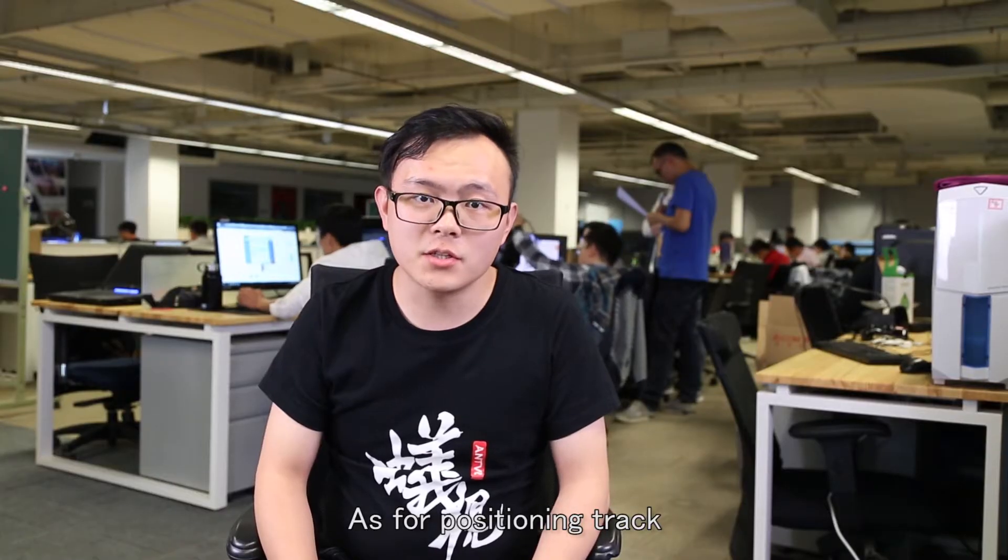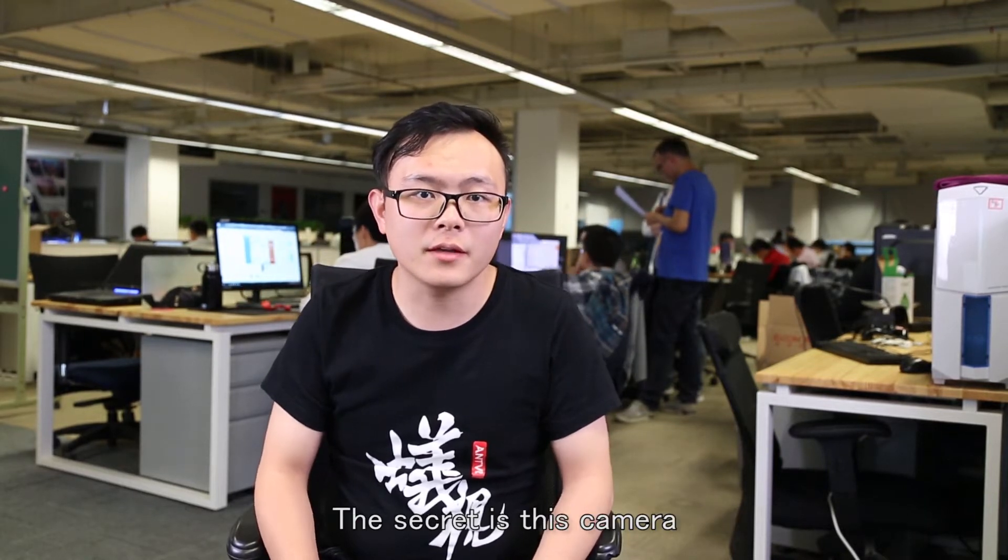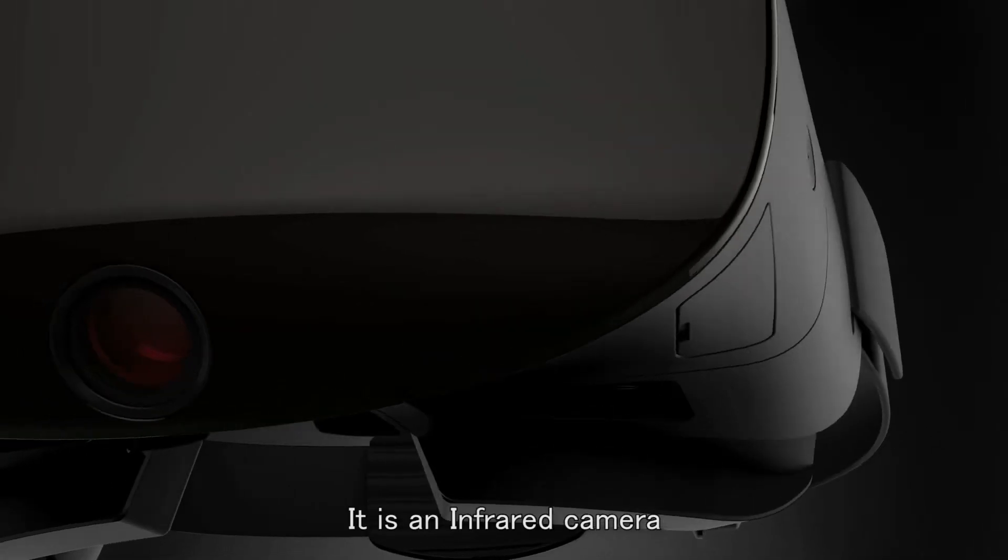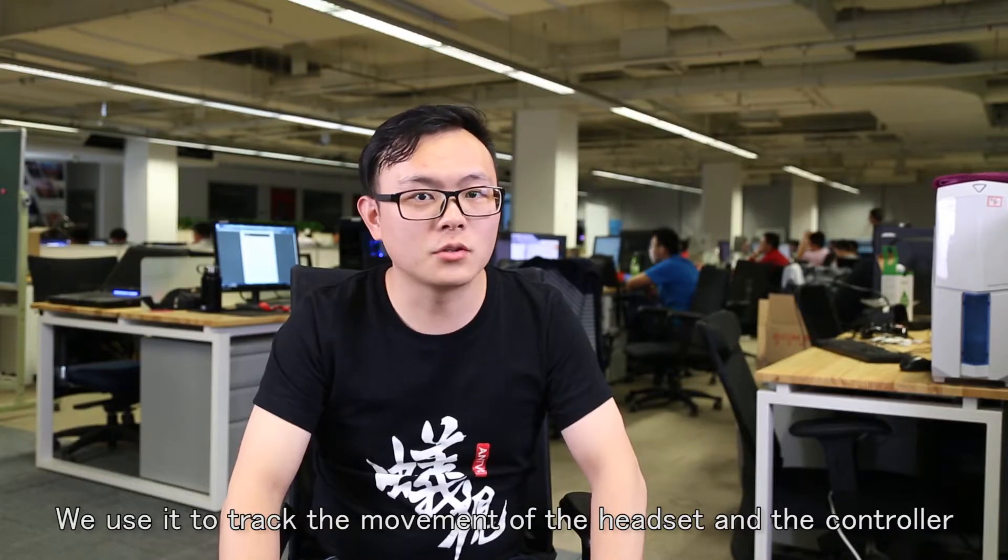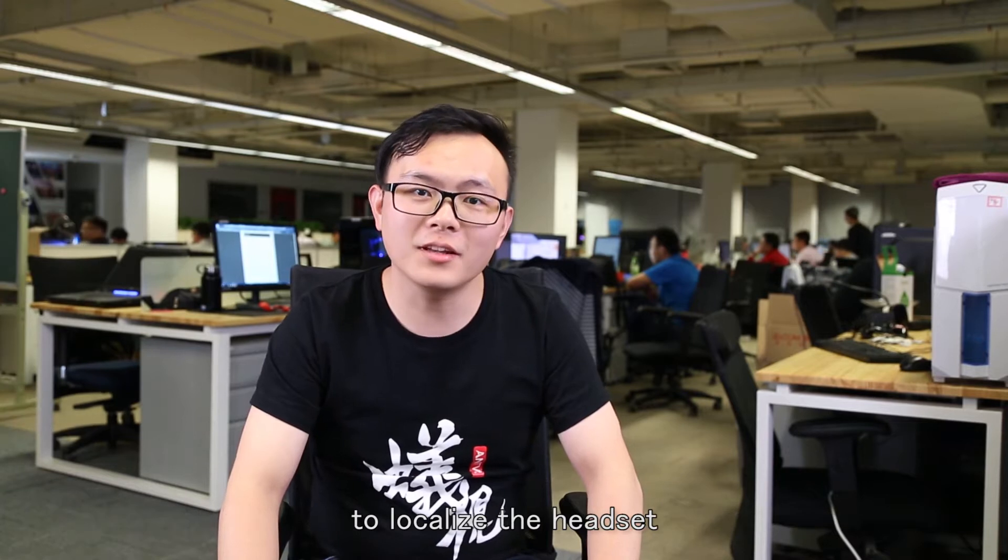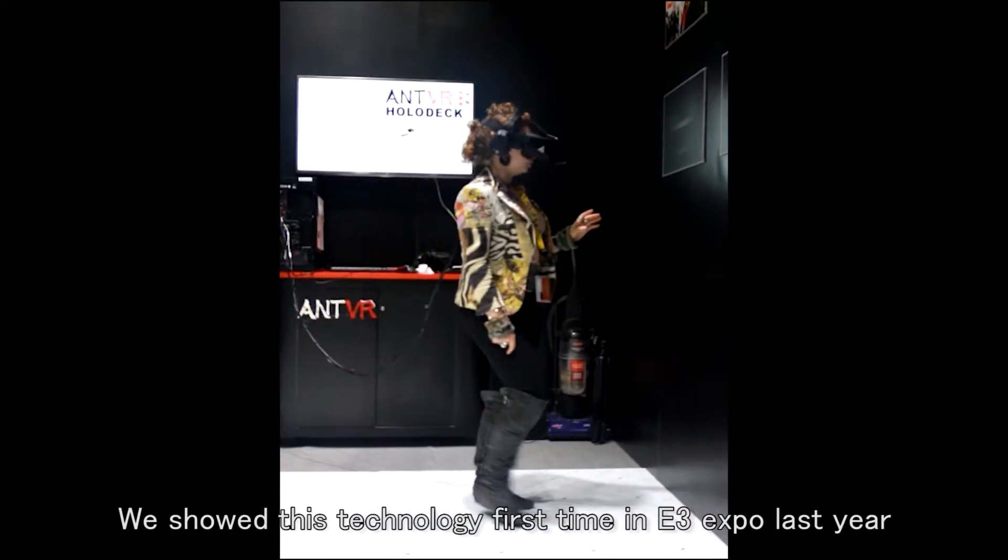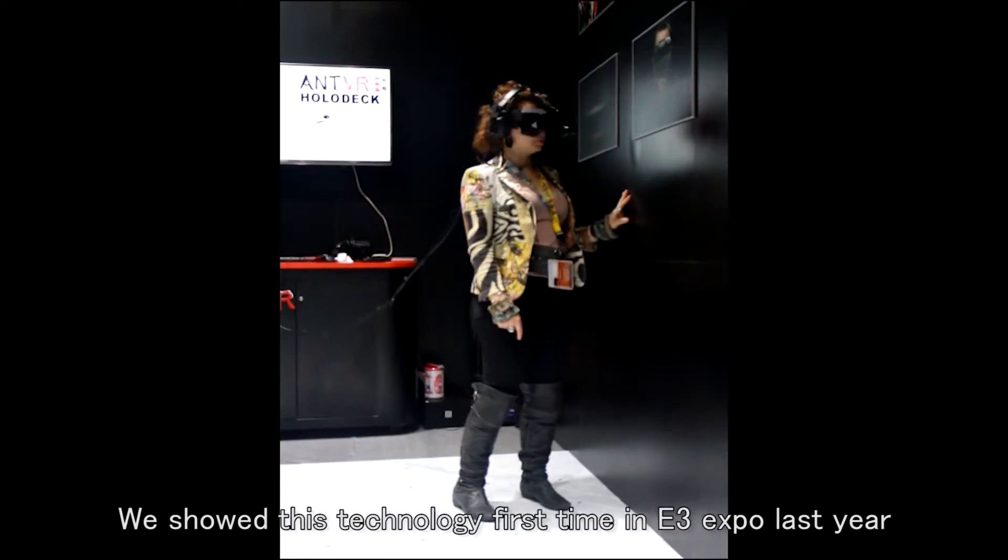As for positioning track, we realize it by a brand new method. The secret is this camera. It is an infrared camera. We use it to track the movements of the headset and the controller. To localize the headset, we need this tracking carpet. We showed this technology first time in E3 Expo last year.